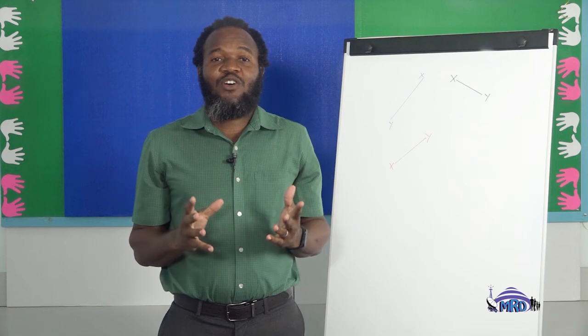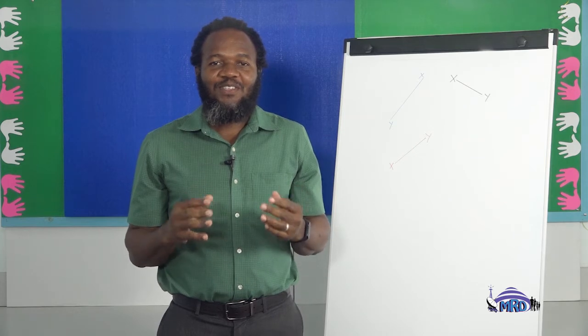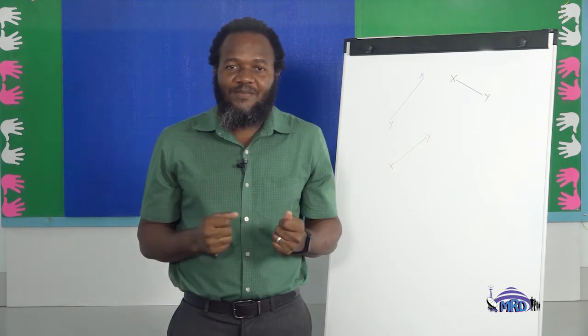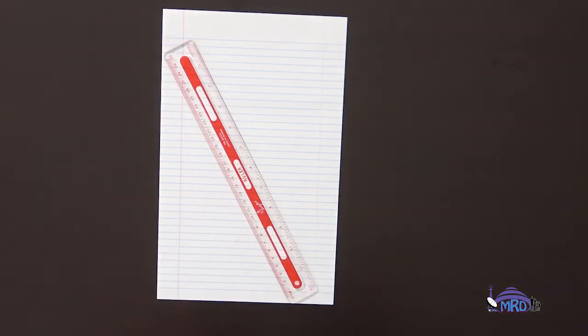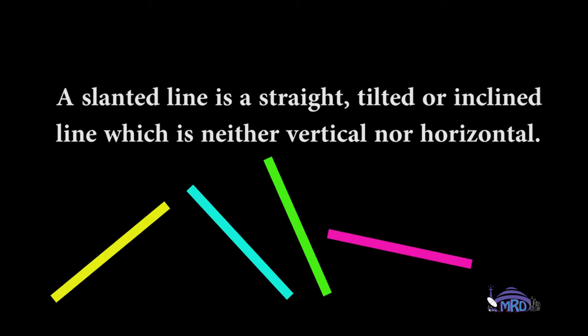Now we're going to draw a slanted line on our page. We'll give you a chance to get your book, your ruler, your pencil, your pen, or your marker. I hope you're ready and have all of your tools — your writing implement, whether it's a pencil, a pen, or a marker, your ruler, and your page. So we position our ruler on the page. Remember the definition of a slanted line: it's a straight, tilted, or inclined line which is neither vertical nor horizontal.